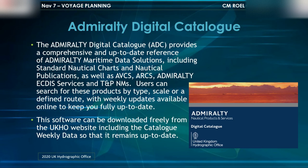The Admiralty Digital Catalog provides a comprehensive and up-to-date reference of Admiralty Maritime data solutions, including standard nautical charts, nautical publications, AVCs, ARCs, Admiralty Active Services, and TNPNMs. Users can search for these products by type, scale, or a defined route, with weekly updates available online to keep users fully up-to-date. This software can be downloaded freely from the UKHO website, including the catalog weekly data so that it remains current.